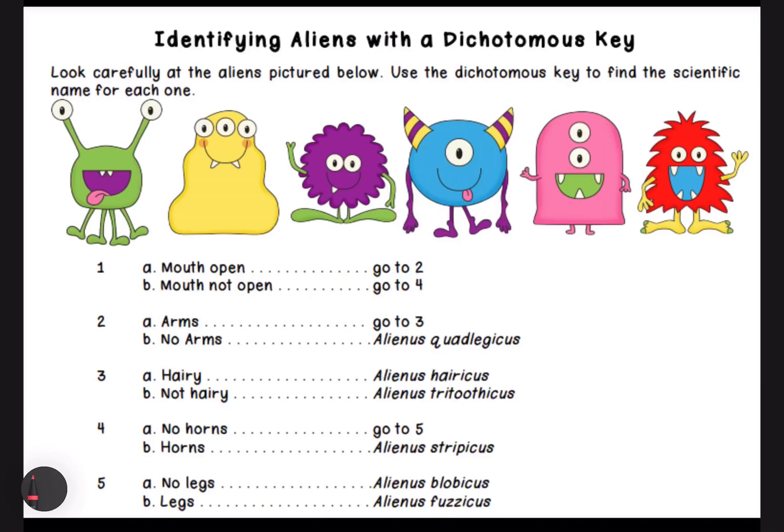Hi everybody, my name is Miss Heaney and today we are going to be learning about dichotomous keys. A dichotomous key is a tool that allows users to determine the identity of an item — for example, trees, animals, reptiles, rocks — and you are using this tool to figure out names, usually scientific names. It consists of a series of choices that leads the user to a correct name.